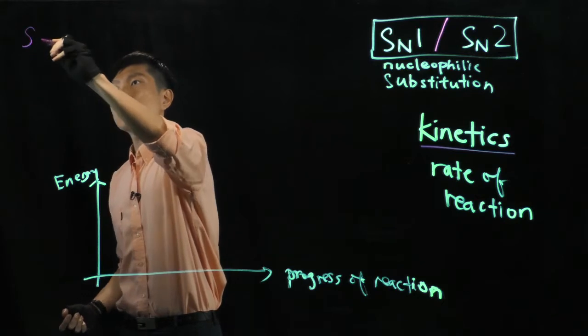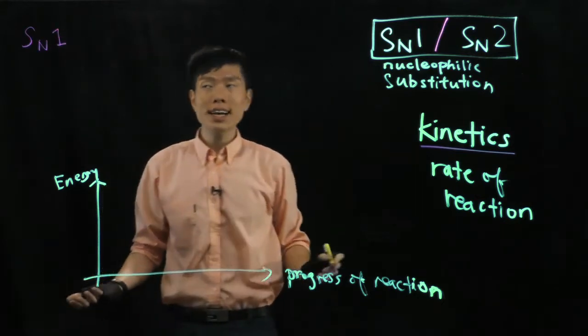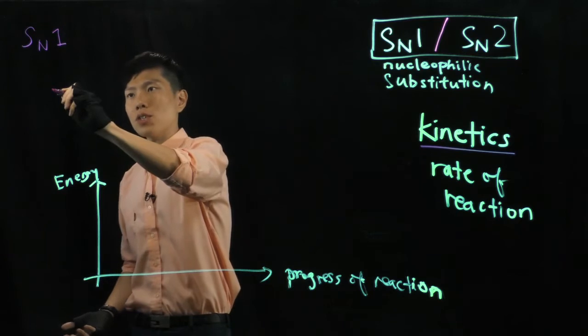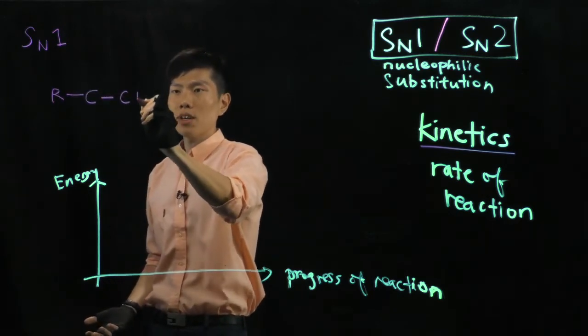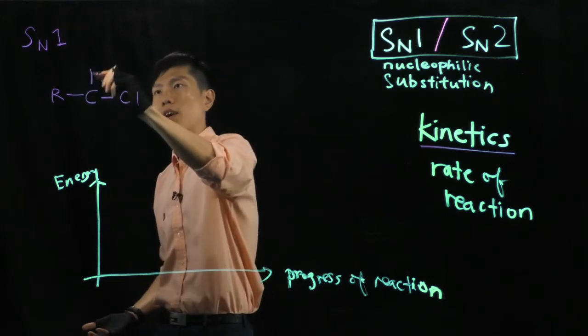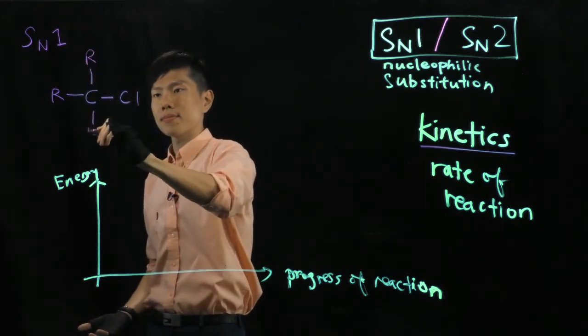And we know SN1 is being favored by what kind of alkyl halide? Tertiary. So, let me just use this example here. A tertiary alkyl chloride, in this case.